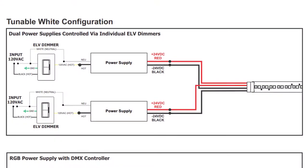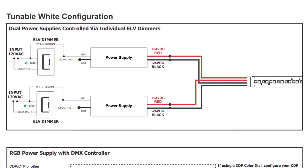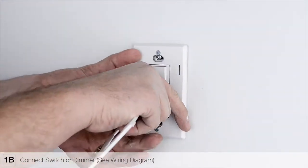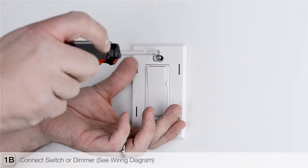Consult the wiring diagram included with the remote power supply to connect it to the main power. Reference the wiring diagram included with your installation instructions to connect either a standard switch or, if desired, a compatible dimmer.